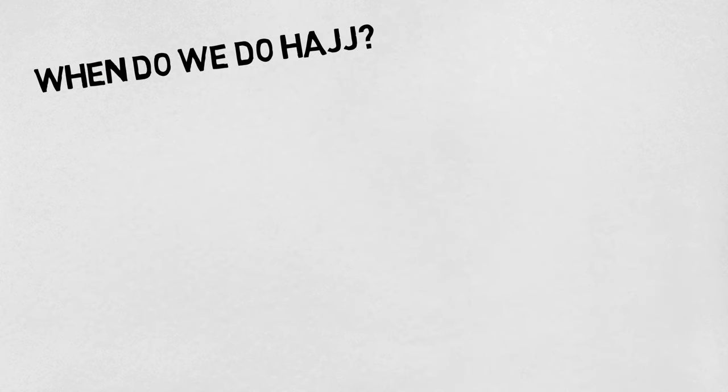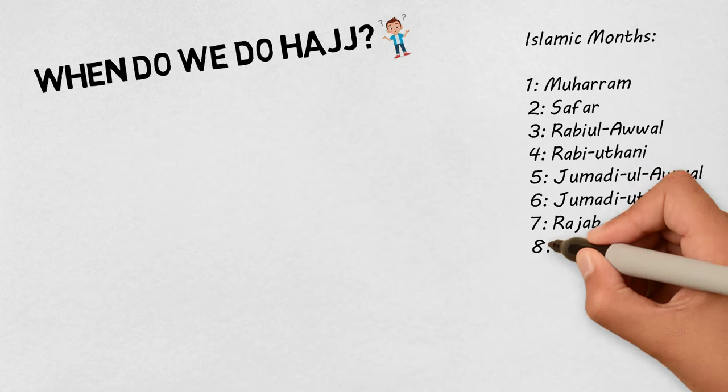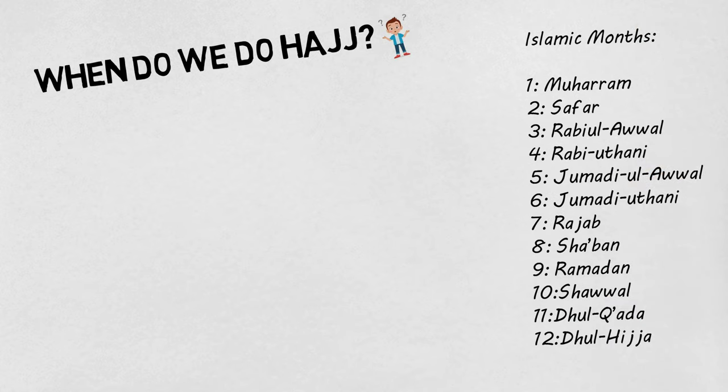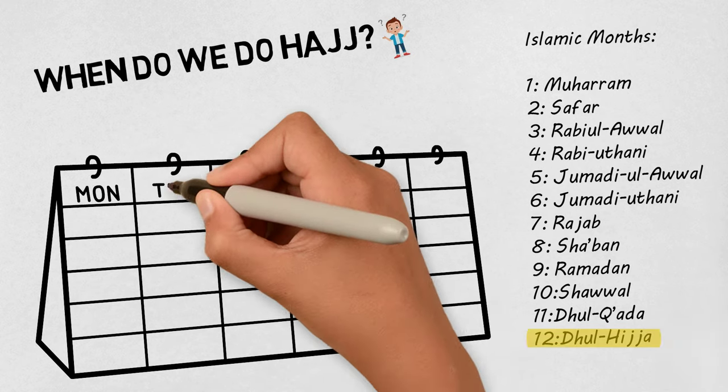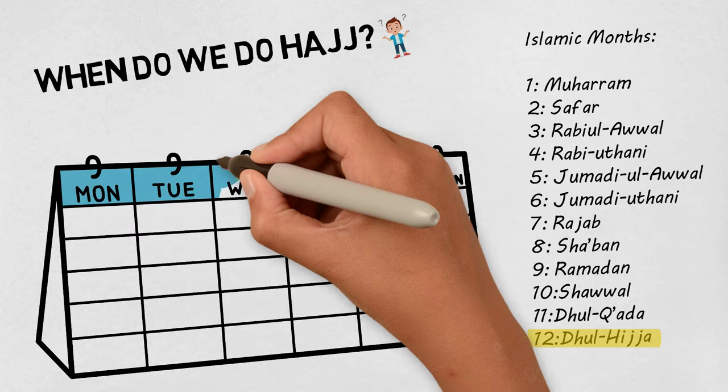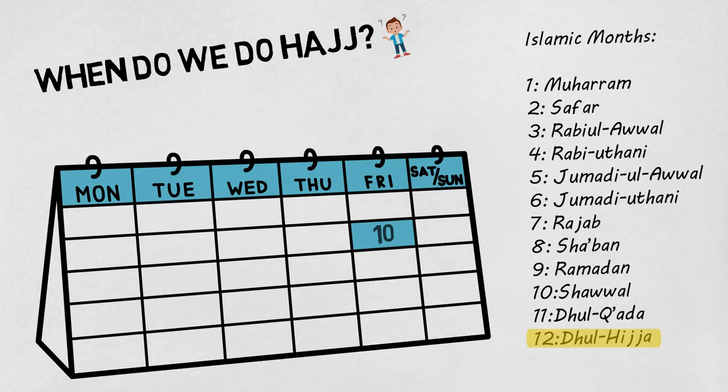When do we do Hajj? Hajj takes place once in the year and must be performed in the month of Dhul Hijjah, which is the last month of the Islamic calendar. On the tenth day, Muslims around the whole world celebrate this event called Eid al-Adha.